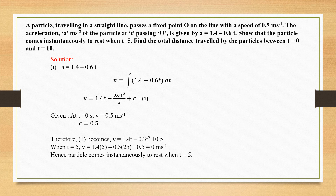Substituting C = 0.5 back gives V = 1.4T − 0.3T² + 0.5. To show the particle comes instantaneously to rest, velocity must equal 0 at T = 5. Substituting T = 5: V = 1.4(5) − 0.3(25) + 0.5 = 0 m/s. Therefore the particle comes instantaneously to rest when T = 5.